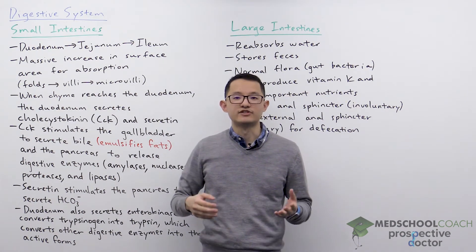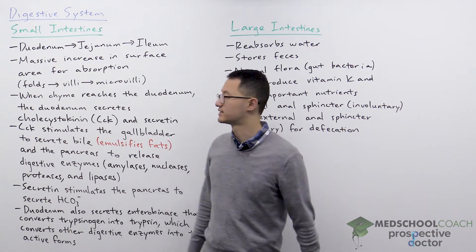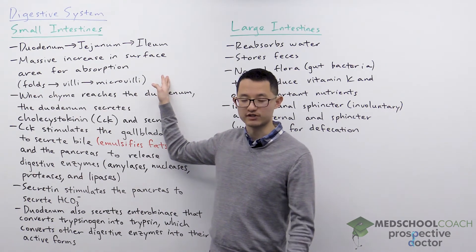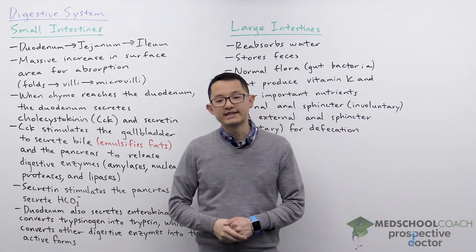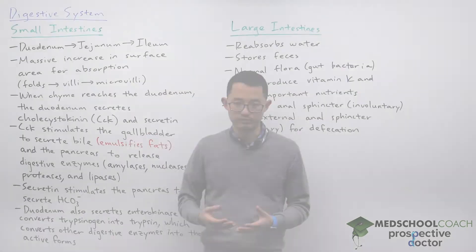The small intestines has roles in both digestion and absorption of nutrients. You can see the absorption in the structure of the small intestines. As you can see in this diagram, the intestinal epithelium are folded. These folds have villi, which are protrusions of the epithelium. Within these villi, the individual epithelial cells have microvilli. All of this structure serves to massively increase the surface area to increase the rate of nutrient absorption.